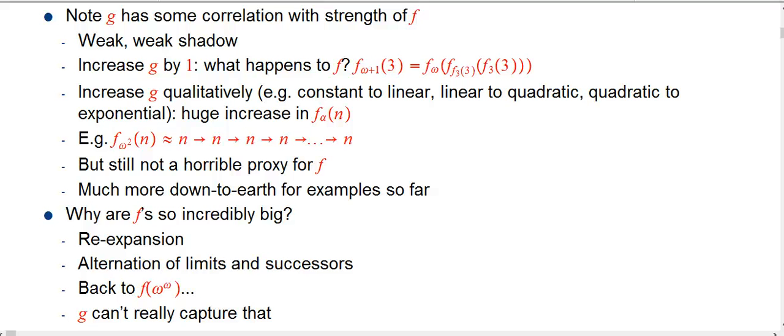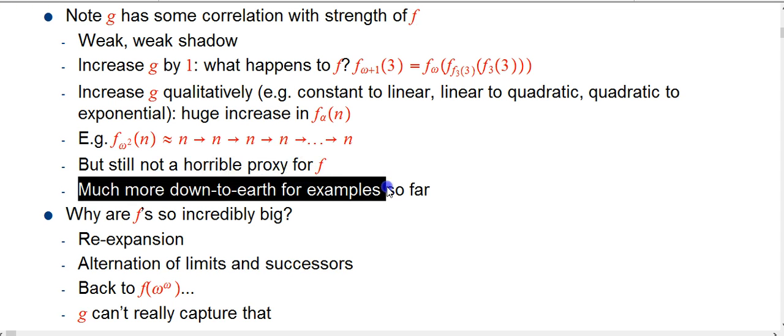So, brief recapitulation. G is a weak shadow of F, but nonetheless a somewhat faithful representative. When F gets bigger, when you increase the ordinal and F gets bigger, G increases in a systematic way. And in particular, it's a much more down-to-earth function. For example, so far,